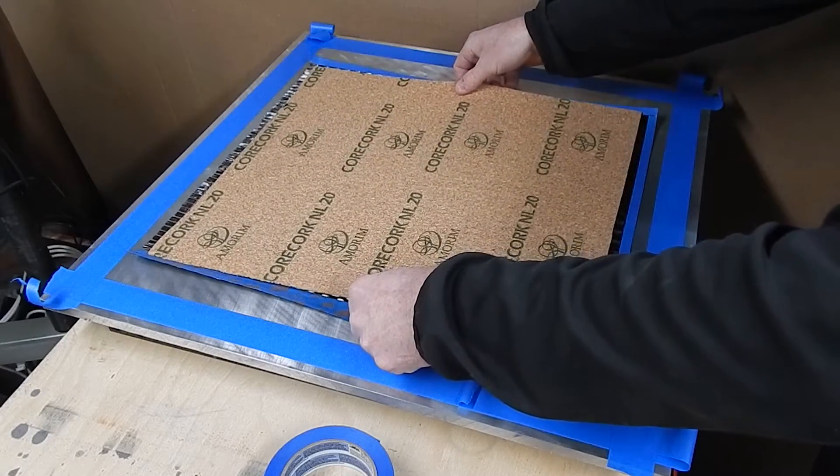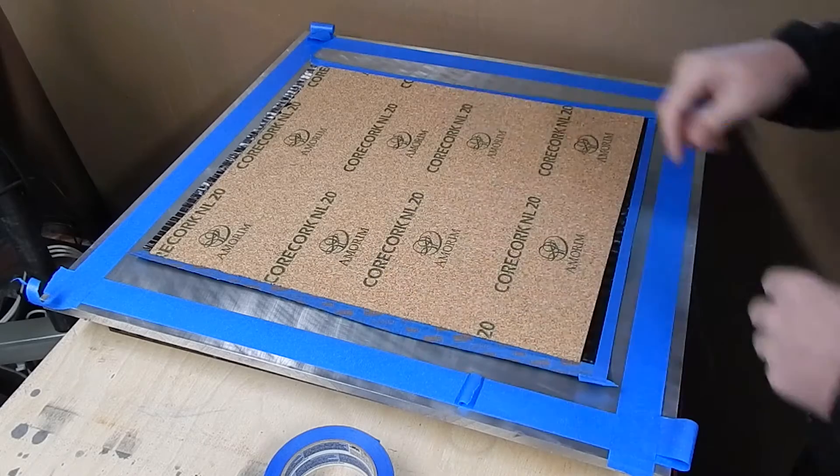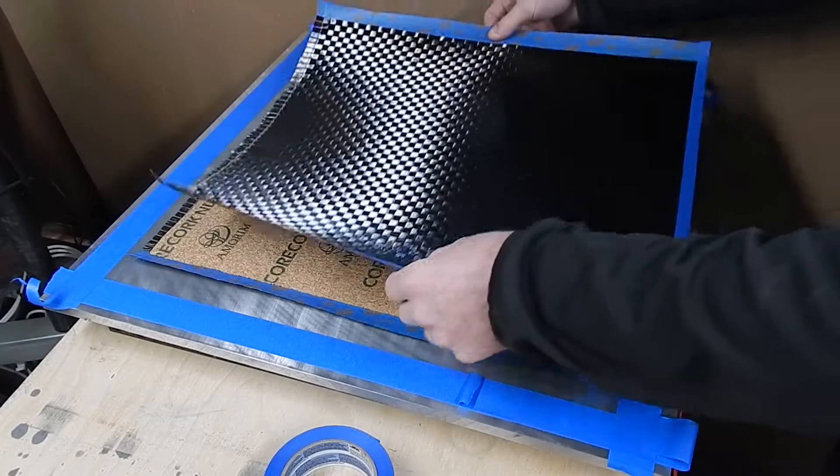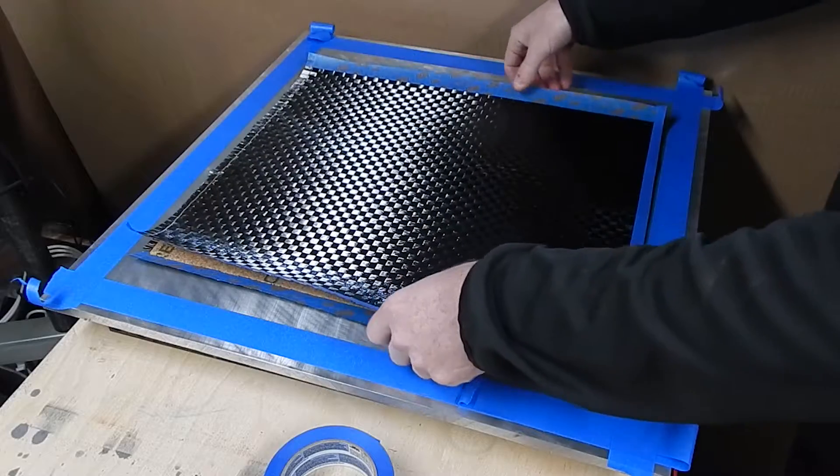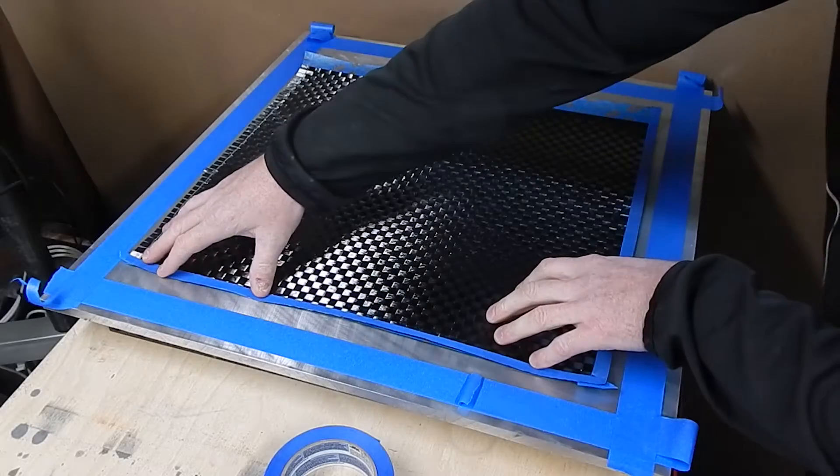Because this core has got natural perforations randomly through it, probably up to about four or five millimeters thick, the resin is going to be able to find its way through. And so this is it for the layup.